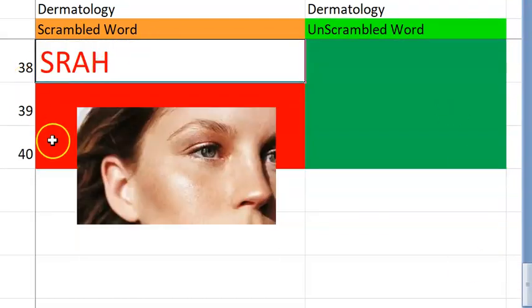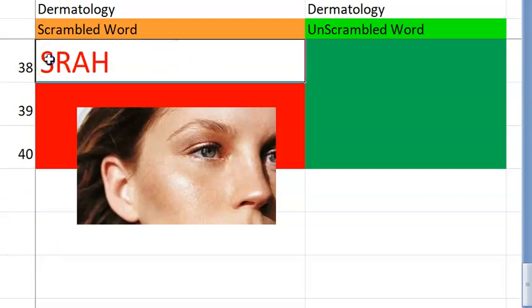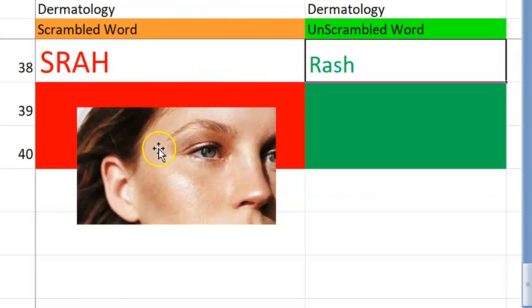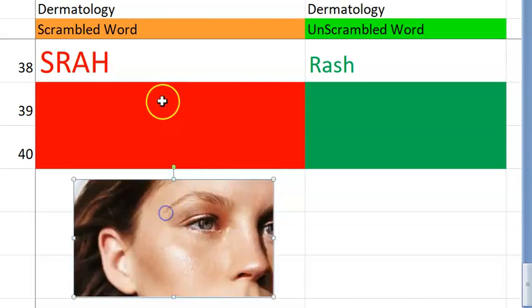Now, coming to the thirty-eighth one. What do you think this is? Such a small word, you should be able to guess very easily. Again, it can be associated with fever, etc., and it can be dengue, so many things. Rash. Very good.